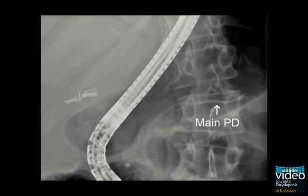We are following the PD around the portal vein and into the pancreas body and back to the minor papilla, suggesting divisum. Subsequently, ERCP with cannulation of the minor papilla demonstrated the main pancreatic duct, confirming divisum.